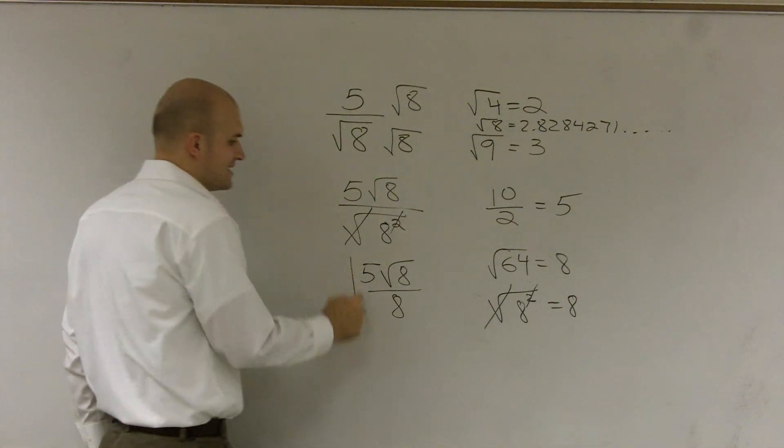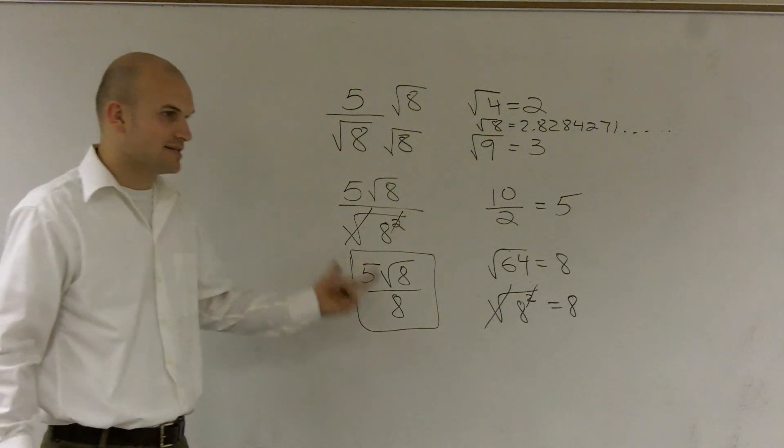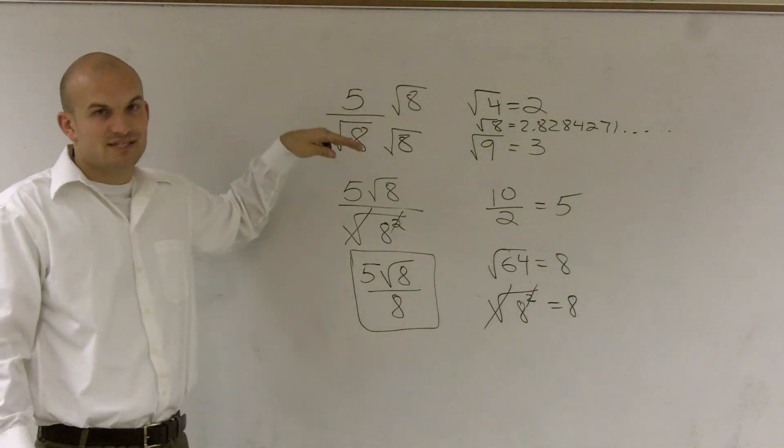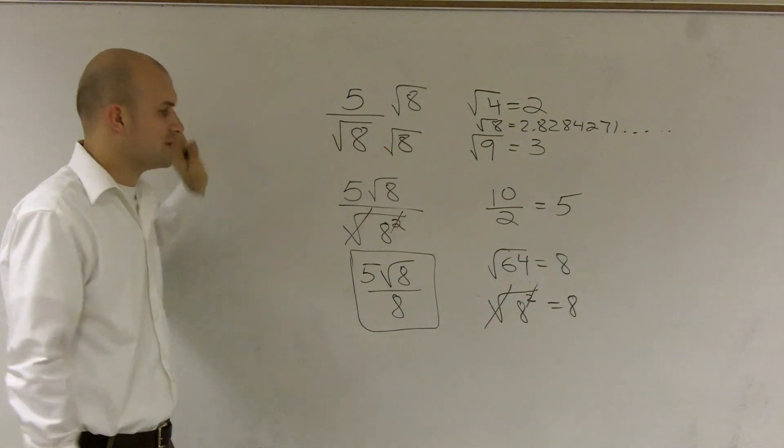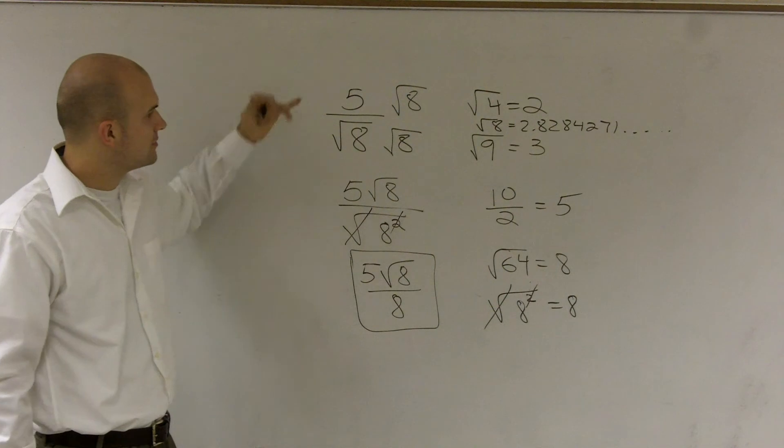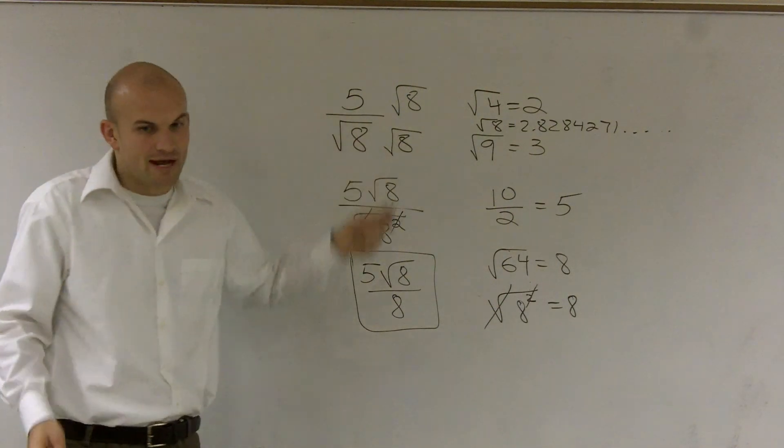And therefore, that is how we want to write our number. Now, still, this is going to be irrational. The square root of 8 is still irrational. However, we're at least not divided by that irrational number. So that's how we simplify a radical when you have a radical on the bottom.